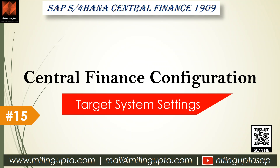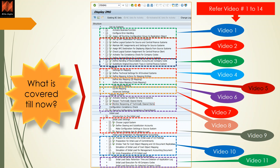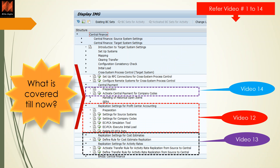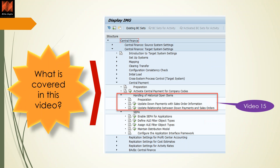This video is in continuation with our previous videos on SAP Central Finance configuration. We already have 14 videos available on CFIN config, covering all areas within CFIN IMG — including profit center, cost estimation, and in video 14 we talked about the introduction to CFIN Central Payments. In this video we will be talking about handling of historical open items.